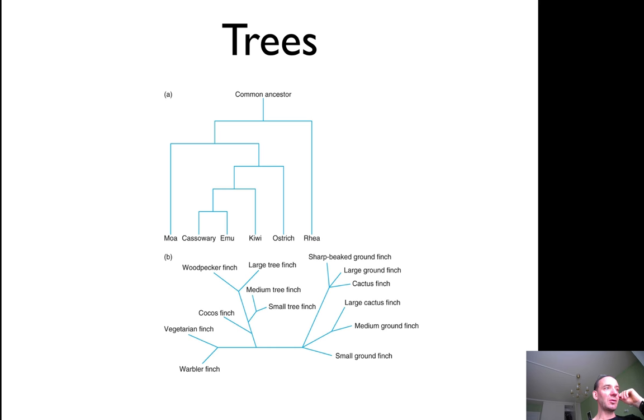However, often—almost always—common ancestors don't exist any longer. We don't really know what the common ancestor was. Actually, what we often know is just how things relate to each other. So placing the root of a tree is not always trivial.